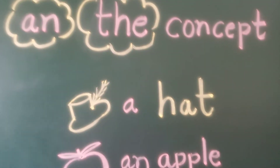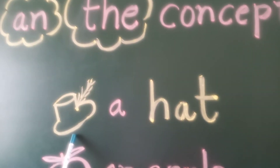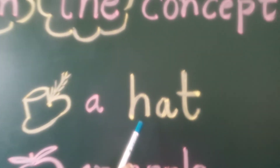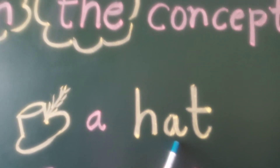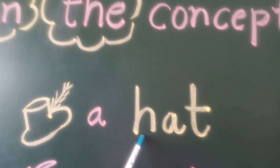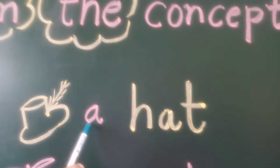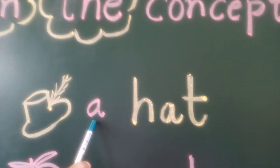Now let us see here. Which picture is this? Hat. H, A, T — hat. H is a consonant, so we are using 'a': a hat.